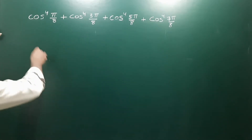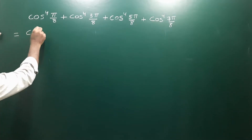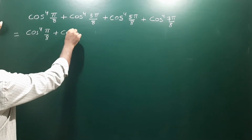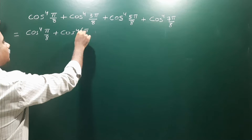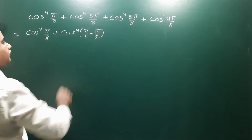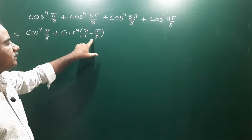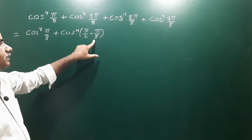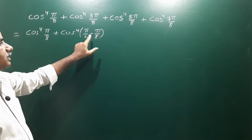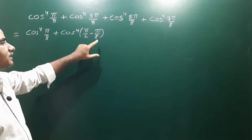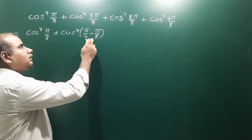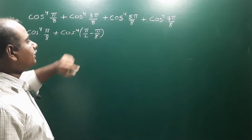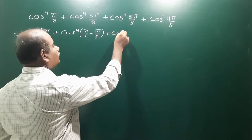Let us see that the first term remains unchanged. The second term cos⁴(3π/8) can be written as cos⁴(π/2 - π/8), since 3π/8 = π/2 - π/8. Taking LCM of 2 and 8, which gives 8, so 4π/8 - π/8 = 3π/8. So 3π/8 can be written as π/2 - π/8.